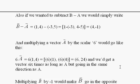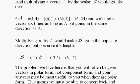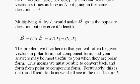and we get a vector six times as long as A, but going in the same direction as A. I should have put an arrow on top of A here and here. You're supposed to put arrows on top of these letters, otherwise it just implies that we're looking at the length of the vector.